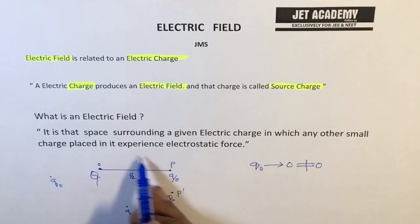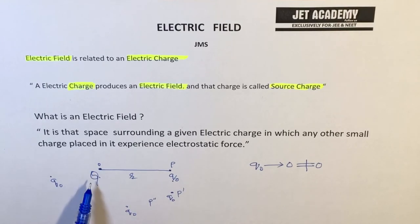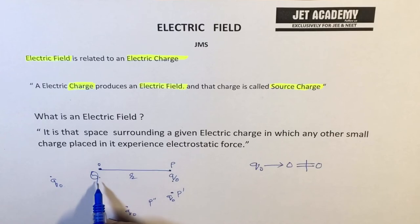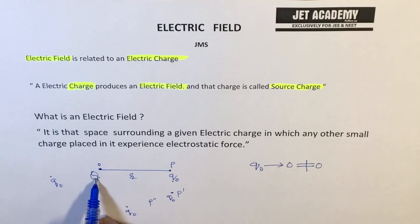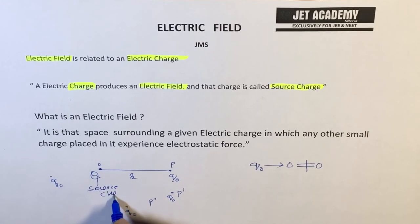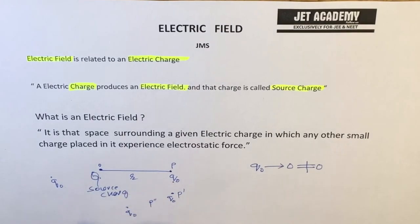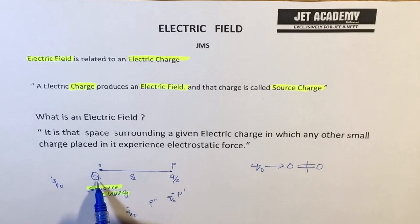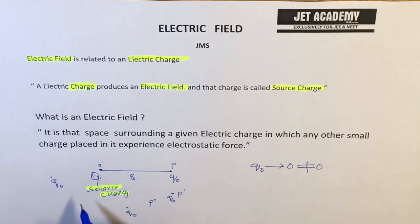The electric field is there surrounding Q. The conclusion here: electric field is the space surrounding a given charge in which any other charge experiences the force. The source charge Q is called source charge because we are interested to study the electric field due to it. Its magnitude may be either a single charge or a group of quantized charges.